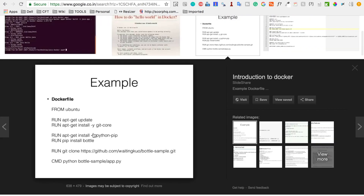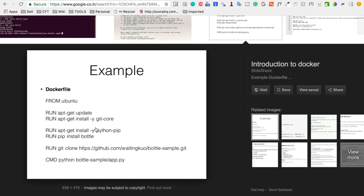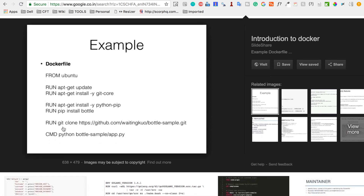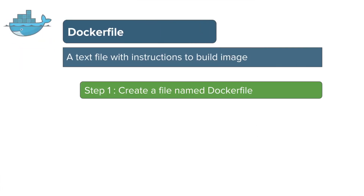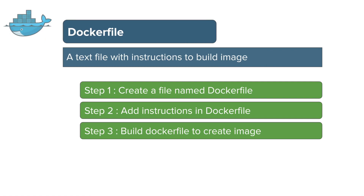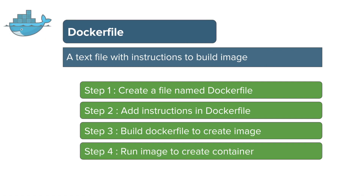We start with FROM and give the base image name. Then we can run some commands on this base image and copy our own libraries. When we build this Dockerfile, we get a Docker image. The four basic steps are: create a file named Dockerfile, add instructions to the file, build it with 'docker build' to create the image, and run the image with 'docker run' to create the container.